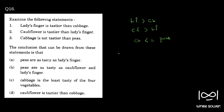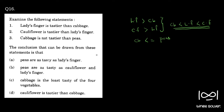The conclusion that can be drawn from these statements — let's look at the options. Option A: peas are as tasty as lady's finger. This is clearly false. From the first two statements we can build: cabbage < lady's finger < cauliflower. Peas may be more tasty than or equal to cabbage, but we don't know whether peas taste better than lady's finger or cauliflower, so A is not the correct answer.